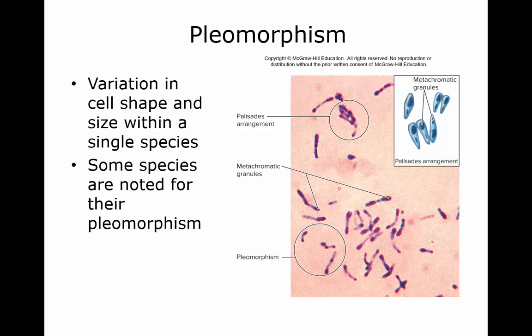To end this video, we're going to talk about pleomorphism — this is a variation in cell shape and size within a single species, and some species are noted for their pleomorphism. Looking at the picture here, you can see different sizes and shapes in this bacteria. The palisade arrangement shows cells right next to each other, and the metachromatic granules are also visible here. So we have all different shapes and sizes within this — it's a pleomorphic species.